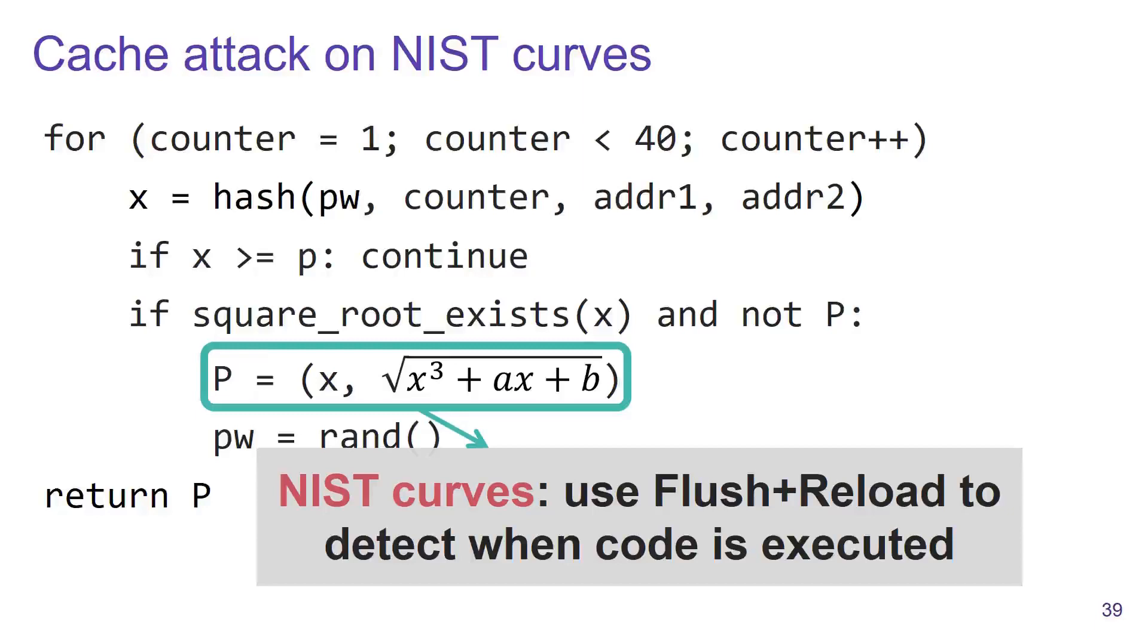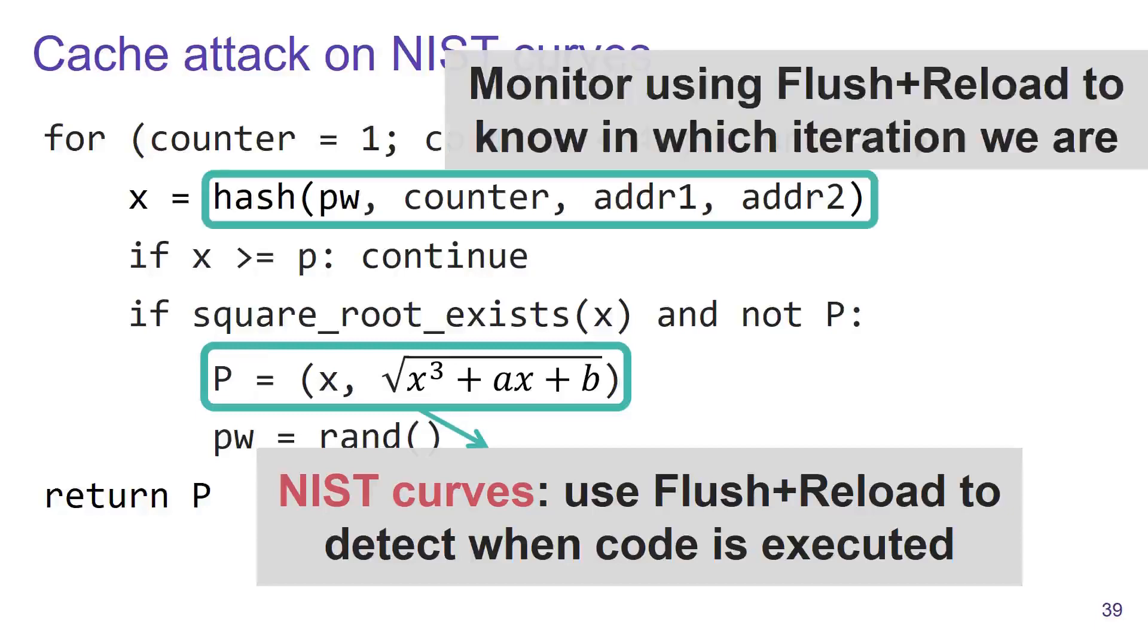To know exactly in which iteration the password element is found, we also use flush and reload to monitor when the hash function is executed. Combined, this allows us to tell whether the password element was found in the first iteration or in a later iteration. The key takeaway message here is that our cache attacks again form a signature of the password which can be used to brute force a dictionary.